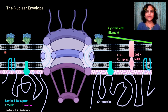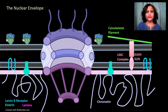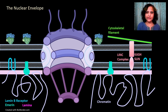The perinuclear space is also continuous with the endoplasmic reticulum lumen. The outer membrane has membrane proteins that can interact with the cytoskeleton — on one side interacting with the cytoskeleton and on the other side with the lamina. Chromatin is present within the nucleus, and in some places it is associated not only with the lamina but also with inner membrane proteins. This association is important for some aspects of gene expression that we will discuss later.